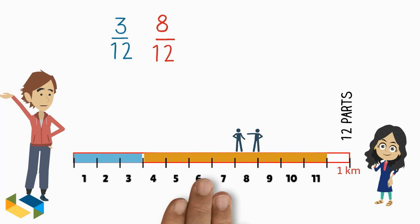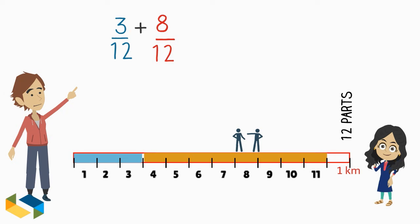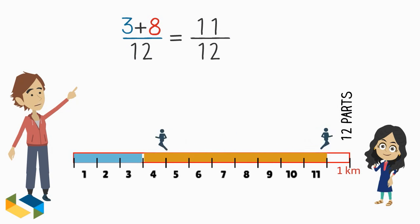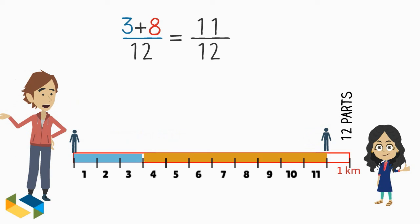To get eleven parts out of twelve. Similarly, we add the numerators in our fractions: three plus eight. The denominator in our result remains the same. So in all, I walked eleven out of twelve parts of a kilometer in these two days.